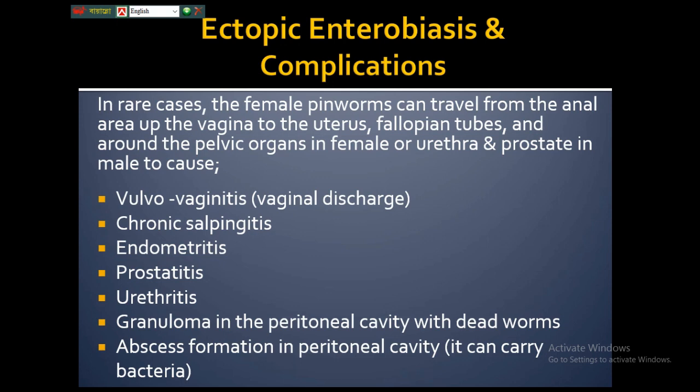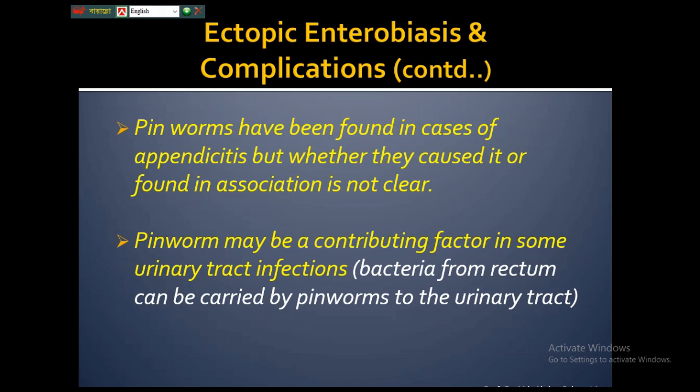From the vagina and uterus, the worm can ascend to the fallopian tubes and pelvic organs. In males, it can reach the urethra and prostate. These migrations can cause inflammation of the genital tract, including vulvovaginitis, vaginal discharge, chronic salpingitis, endometritis in females, and prostatitis and urethritis in males. Dead worms can give rise to granuloma in the peritoneal cavity, and secondary bacterial infections can cause abscess formation.